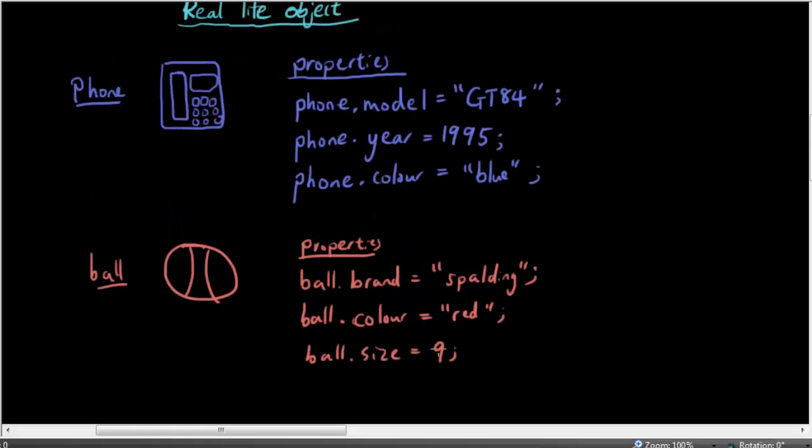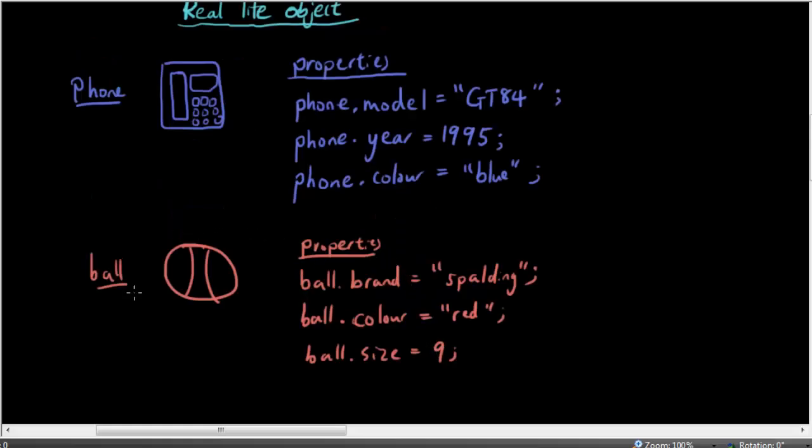So I want you guys to write out another object and write out some properties for that object. Come back when you're done. So here is my object that I did while I was waiting for you guys. And it has some properties, the brand of the ball, the color of the ball, the size of the ball, and so on. So just about every real life object has properties.